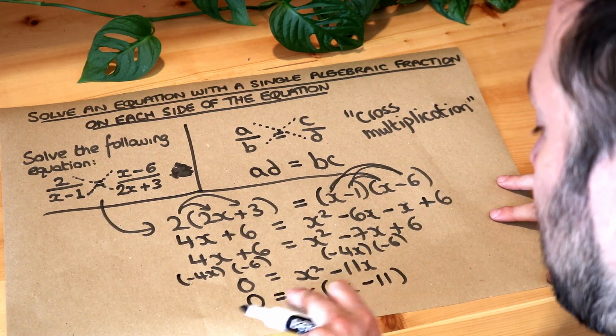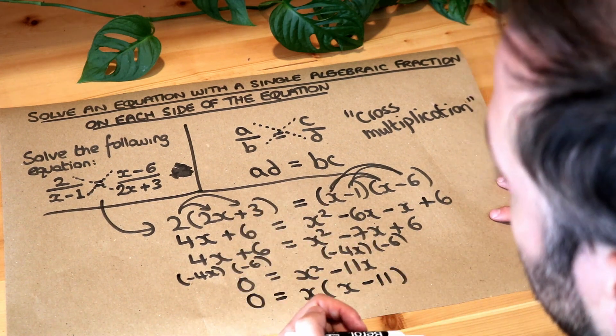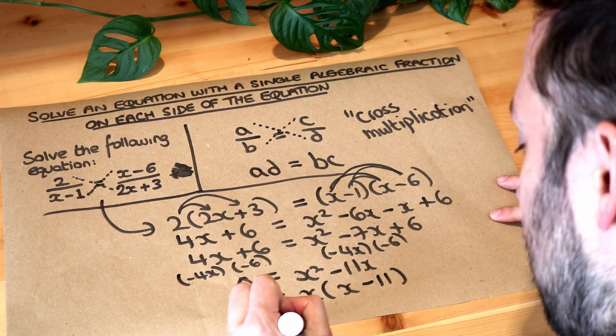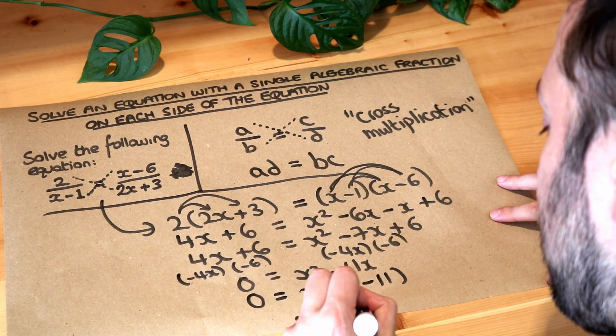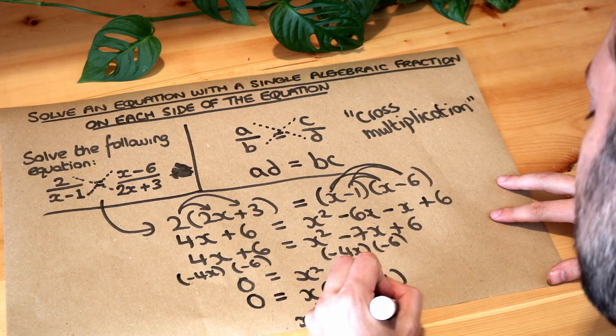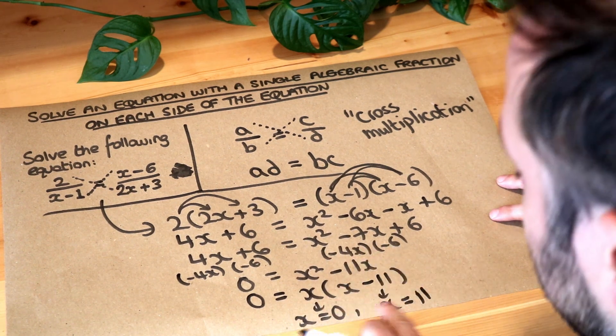Now we've got a product of two things equals 0. Well if a product of two things is 0 one of them has to be 0. So either x is 0, so x equals 0 is a solution, or x minus 11 is equal to 0, so that would make x be equal to 11.